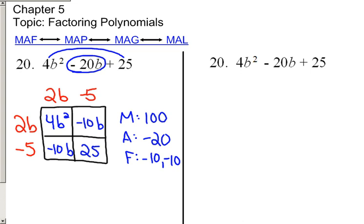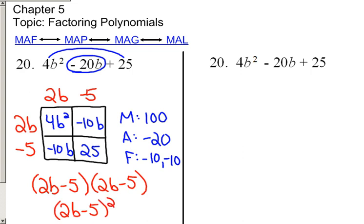The correct factorization of 4B squared minus 20B plus 25 is 2B minus 5 times 2B minus 5. Since those two factors are equal, the best way to write it would be 2B minus 5 quantity squared.